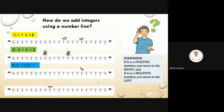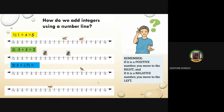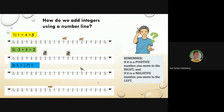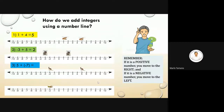Next, number three: five plus negative seven. What do you think the answer is? Negative two. Very good, the answer is negative two.